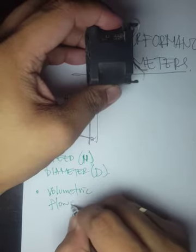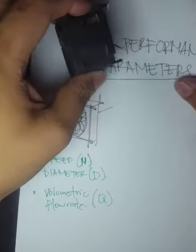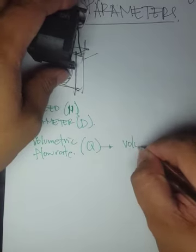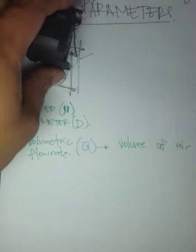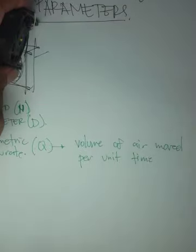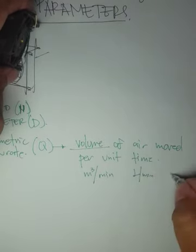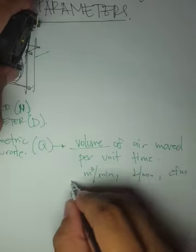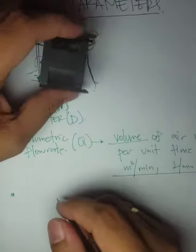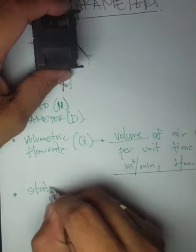When we talk about the movement of air, we're talking about the volumetric flow rate — or just air flow or flow rate. Let's designate it with the symbol Q. The flow rate is the volume of air moved per unit time, so that's going to be cubic meters per minute, liters per minute, cubic meters per second, or CFM. What else? The fan also has a static pressure.